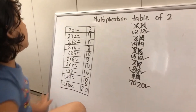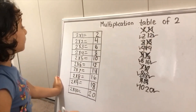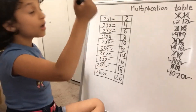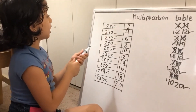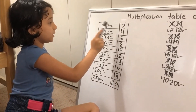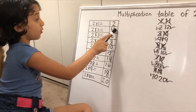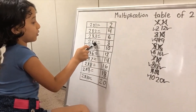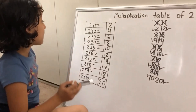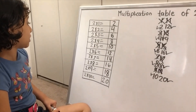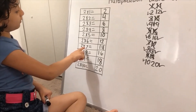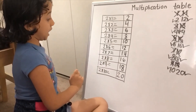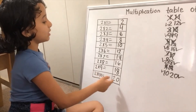So that's how we arrange the multiplication tables of two. That's the trick. Now we're gonna read it. Two times one equals two. Two times two equals four. Two times three equals six. Two times four equals eight. Two times five equals ten. Two times six equals twelve. Two times seven equals fourteen. Two times eight equals sixteen. Two times nine equals eighteen. Two times ten equals twenty.